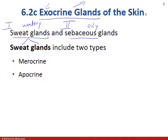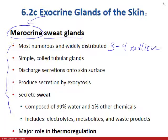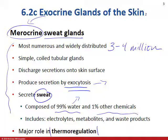Now we're talking about the two different types of sweat glands: merocrine and apocrine sweat glands. The merocrine sweat gland is really widely distributed — there are three to four million of these sweat glands all over the entire body. They're simple, coiled, and they produce sweat by exocytosis. Sweat is mostly water for thermoregulation — that water evaporates and pulls heat away from the body — but there are also some waste products, metabolic intermediate chemical structures, and electrolytes like salt.